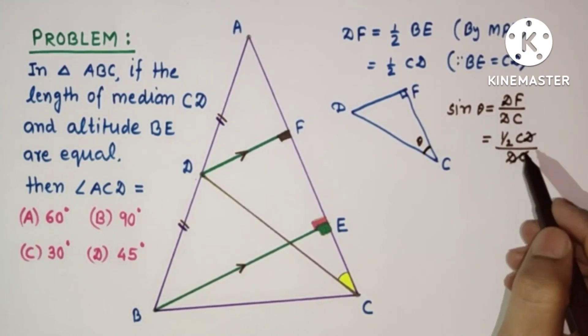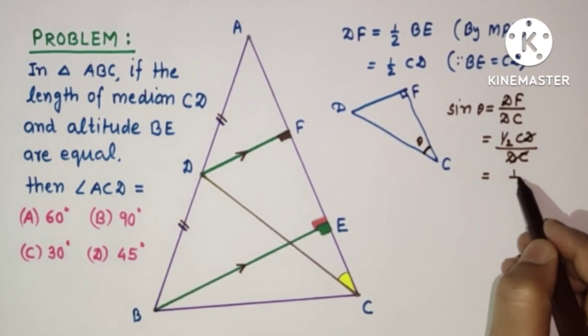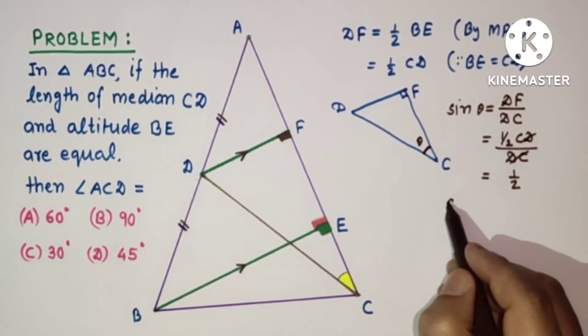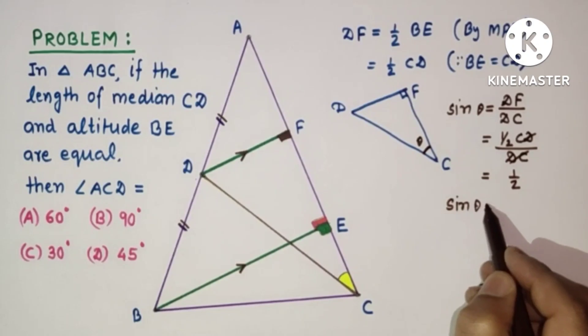Half CD by DC. DC DC cancelled, which is equal to half. Sin theta is equal to half.